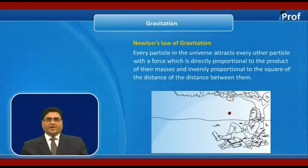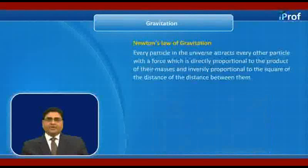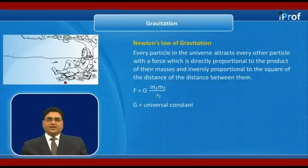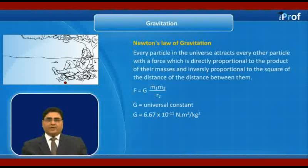As shown in the figure, two point masses M1 and M2 are located at a distance R. The gravitational force acting between them: F = G M1 M2 / R², where G is a universal constant whose value was determined by Cavendish, equal to 6.67 × 10⁻¹¹ N·m²/kg².